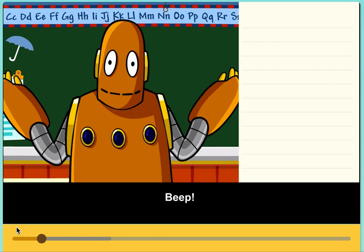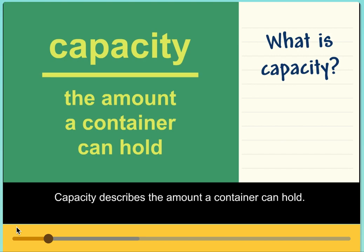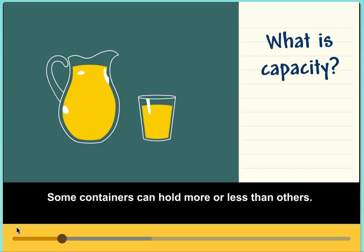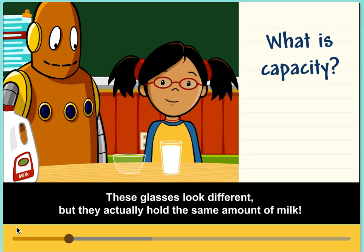What is capacity? Capacity describes the amount a container can hold. Some containers can hold more or less than others. These glasses look different but they actually hold the same amount of milk.